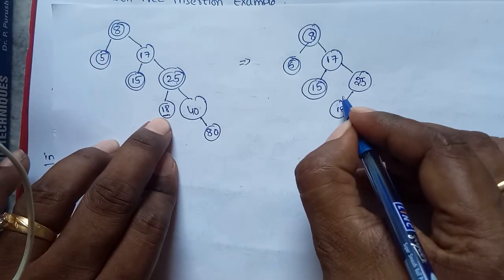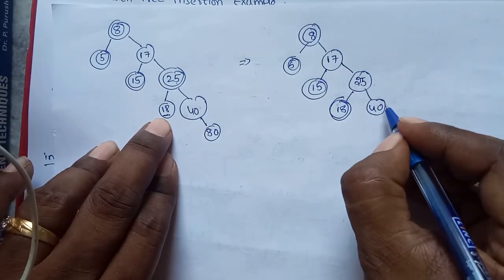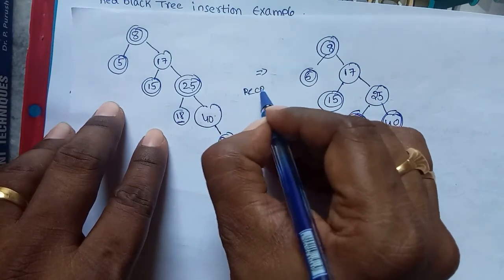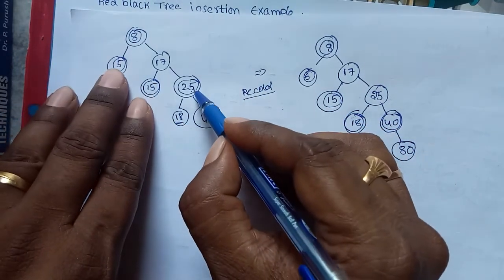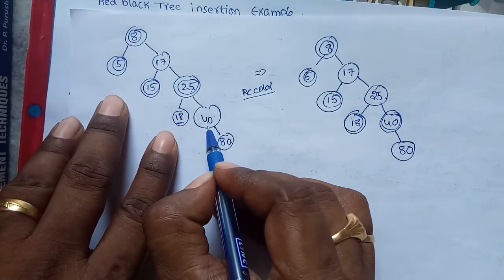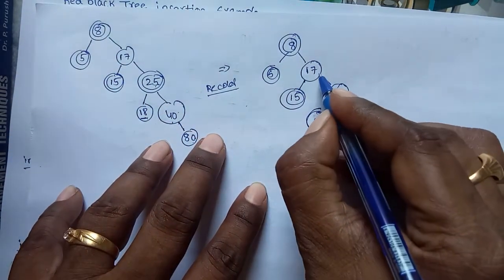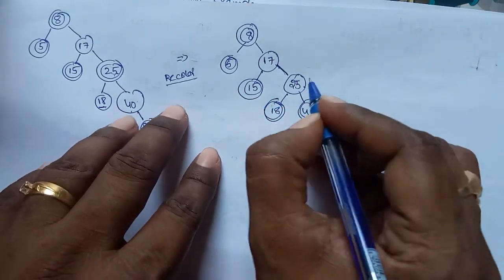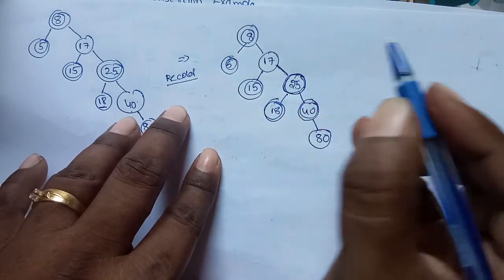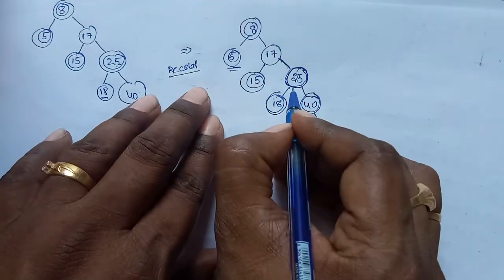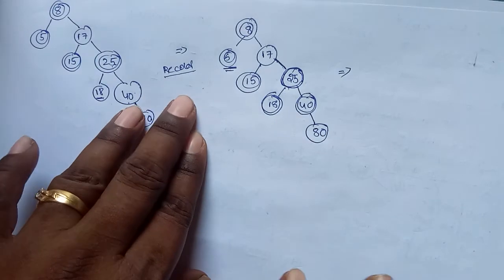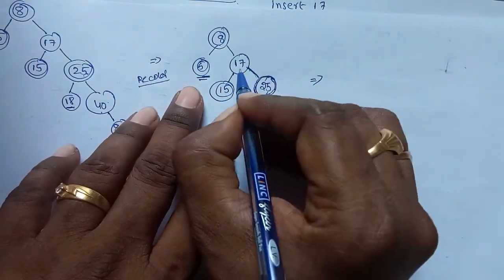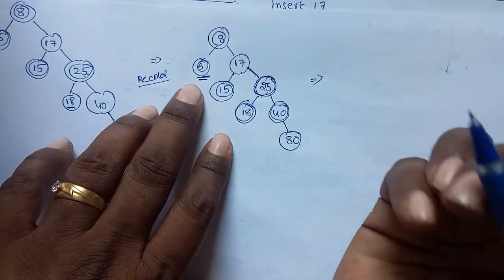After the recolor, we again have two consecutive red nodes — 17 and 25. The uncle node is 5, and the uncle node color is black. So we must perform a rotation. After recolor, always check again if properties are satisfied. For 25, the parent is 17 and the sibling is 5, so the uncle node color is black. This is the Right-Right case, so perform a left rotation on 8.